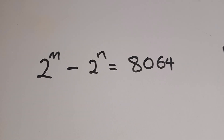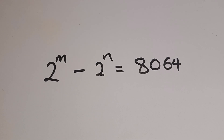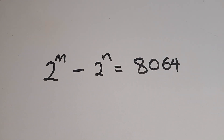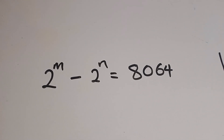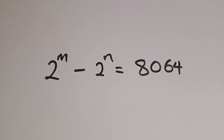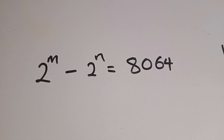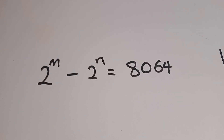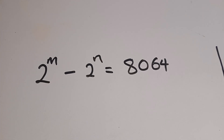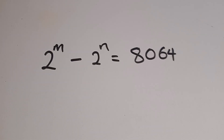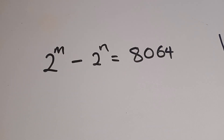Today we have this math olympiad challenge. We are asked to find the value of m and n. If you look at this equation carefully, you will see that we have two unknown exponents, that is m and n. Follow me to the end of this video so that you will be able to know how to solve this kind of challenge whenever you have it.